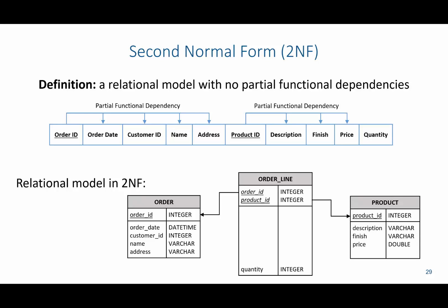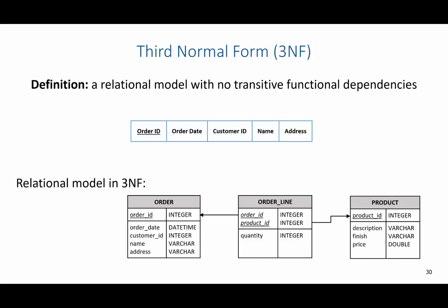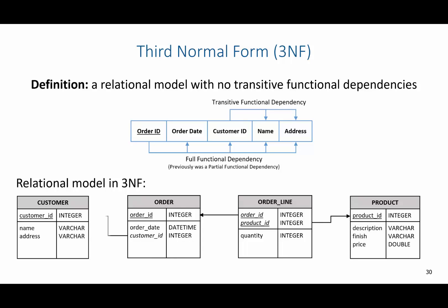Now we have a relational model in second normal form. What we're left with in the middle is the full functional dependency: order ID and product ID determining quantity. To move to third normal form, we need to remove transitive functional dependencies, where A determines B and B determines C. Order ID is our A, customer ID is our B, and name and address are our C. B becomes a foreign key in the order relation, so customer ID is now a foreign key, and everything that B determines — customer ID, name, and address — becomes part of a new customer relation.